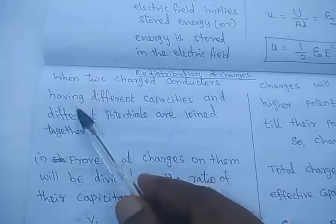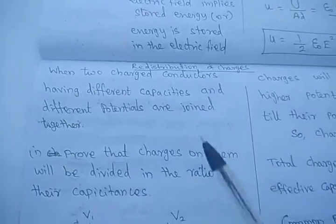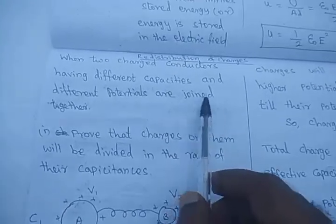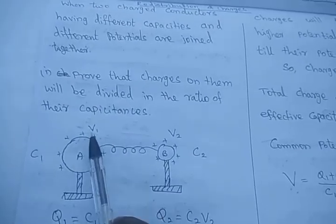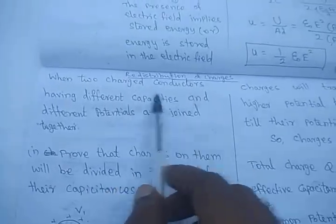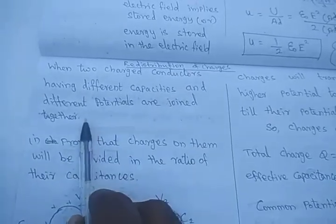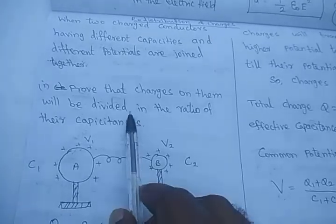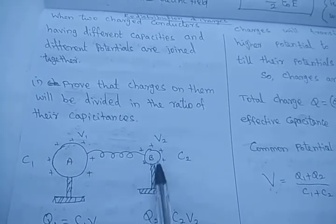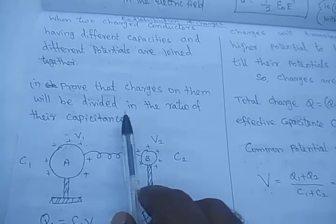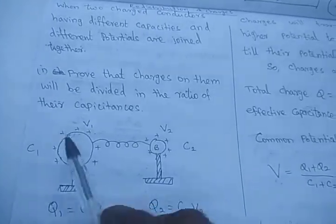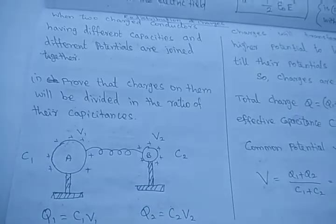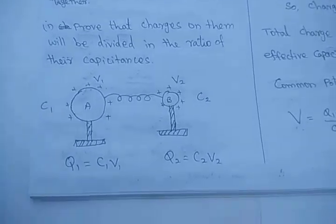Let us see one question. When two charged conductors A and B have different capacitances C1 and C2 and different potentials V1 and V2, and they are joined together, we have to prove that the charges on them will be divided in the ratio of their capacitances — that is, the charges are proportional to their capacitance values. Now we are going to derive the expression and prove this.